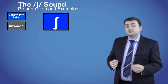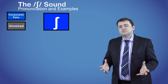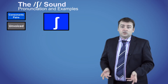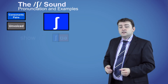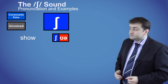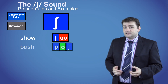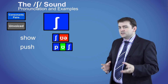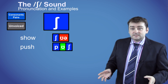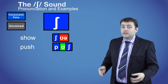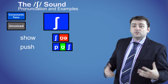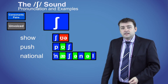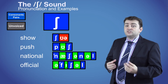The shh sound is normally spelled with the letters SH, as in the words SHOW and PUSH. But it can also be spelled with the letters TI or CI, as in the words NATIONAL and OFFICIAL.